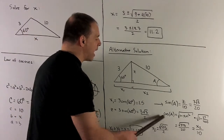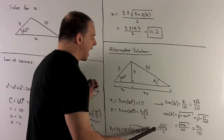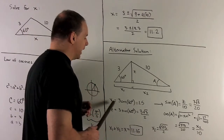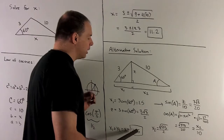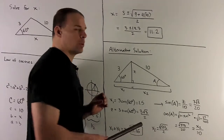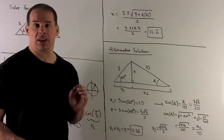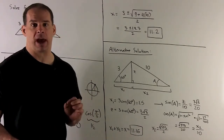We work this out and add it to our 1 and a half. We get 11.16, and when we round that, we get our 11.2 back — confirming our first answer.